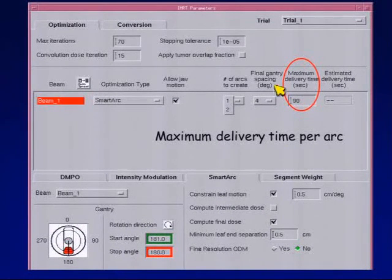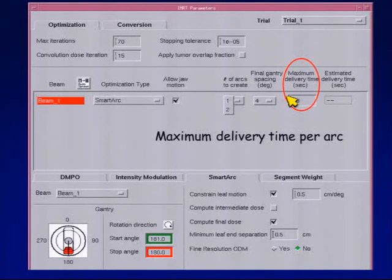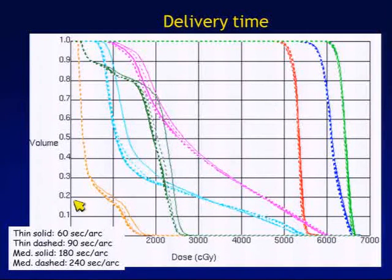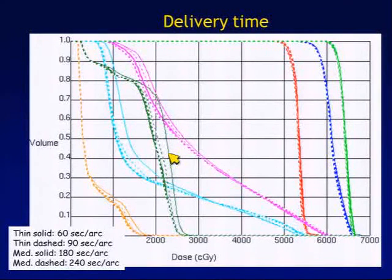In Pinnacle, you can specify the maximum delivery time for the arc — this is a way to balance plan quality and delivery efficiency. If you push the arc to deliver very fast, you might lose something in plan quality. Testing delivery times of 240 seconds, 180 seconds, 90 seconds, and 60 seconds per arc, there's a breaking point around 60 seconds per arc where you start to sacrifice plan quality. For higher values, there's really no difference in plan quality.